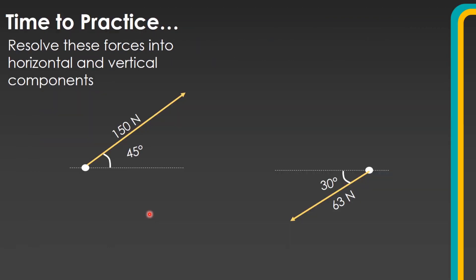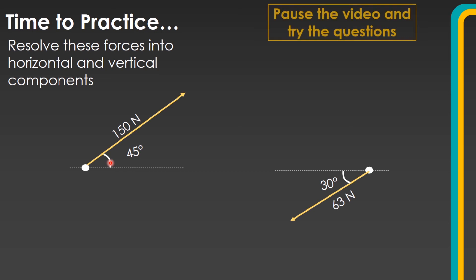You've got two examples to have a go at. For each example, you're going to need to draw it out to scale on your piece of paper first — draw your horizontal line, the force at the correct angle, all to scale. Then you'll be able to split it into a horizontal and vertical component. Pause the video and try those two questions.